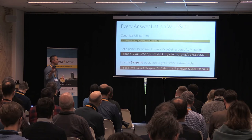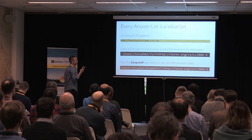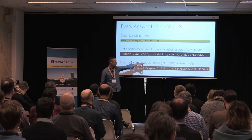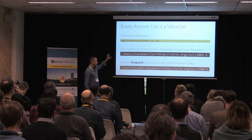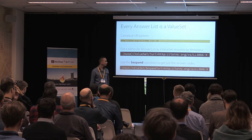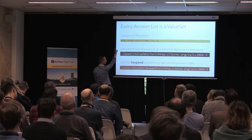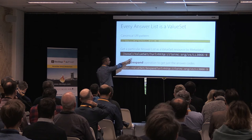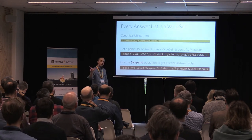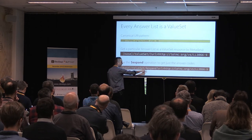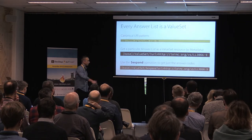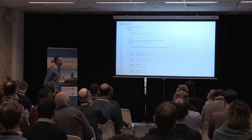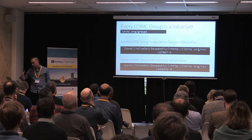The second use of the value set resource is answer lists. Within LOINC, each collection of allowed responses is given a coded identifier called an LL code — that stands for LOINC list. Each answer list can be retrieved as a value set if you know or find the LL code. The canonical URI pattern is loinc.org/VS followed by the list identifier. If you want to expand that value set, you use the expand operation, and you'll get back the set of codes that the value set contains. You can pass the value set to get the metadata and definition, or use the expand operator to just get back the list of codes.